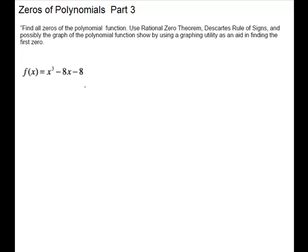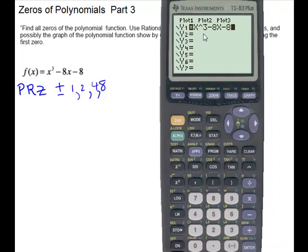Our next problem. We will do possible rational zeros. So plus and minus. And it's going to be factors of the constant. So 1, 2, 4, and 8 over your leading coefficient. Factors of it, which is 1. And so we don't have to write that. We will go ahead and pull up the calculator to get a zero. I have typed the function in just to save us a little time. X cubed minus 8x minus 8. Now we'll say graph.